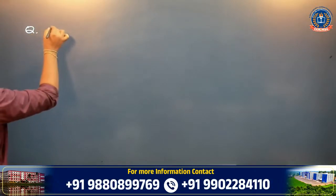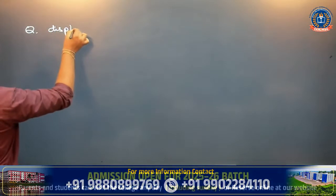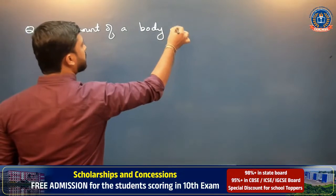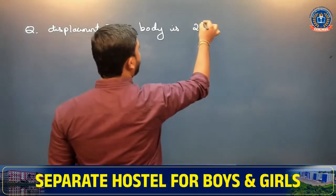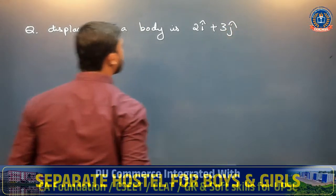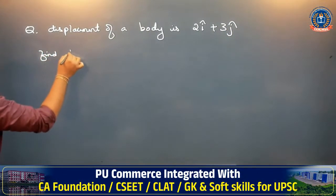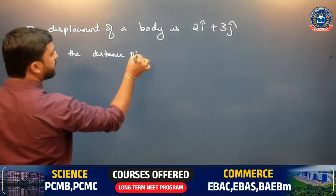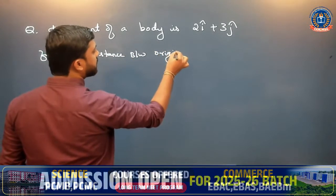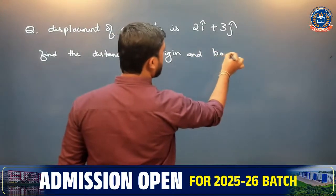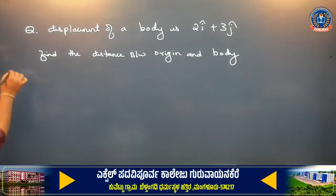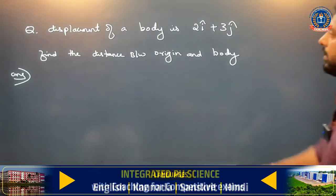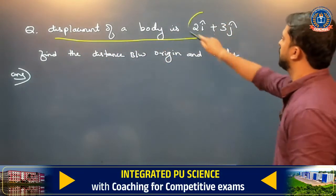The question is: displacement of a body is 2i cap plus 3j cap. We can find the distance between the origin and the body. We shall solve this. What is the meaning of displacement of a body being 2i plus 3j?